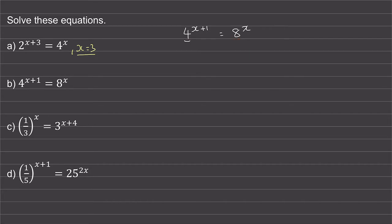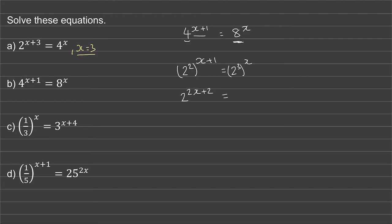So this 4 is the same as 2 squared, which we're raising to the power of x plus 1. And this 8 is 2 cubed, which we're raising to the power of x. Again, we can use the power rule where we multiply the 2 by the x plus 1. So we have 2 to the power of 2x plus 2, and this is equal to 3 multiplied by the x, so 2 to the power of 3x.